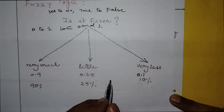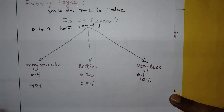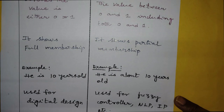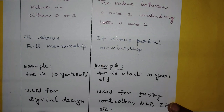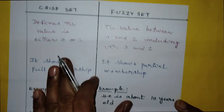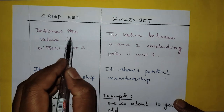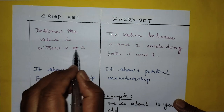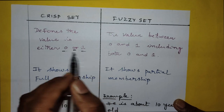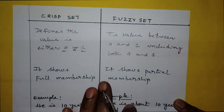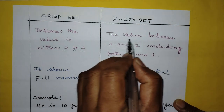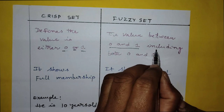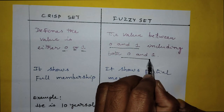Now let us come to the difference. In a crisp set, the value is either 0 or 1. But in the case of a fuzzy set, the value is between 0 and 1, including both 0 and 1.